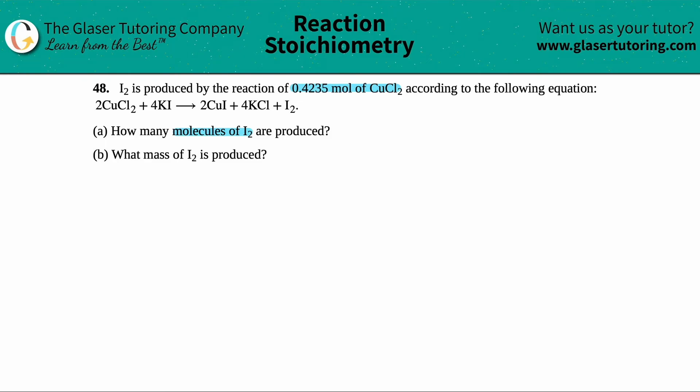Okay, so the first thing I'm going to do is I'm just going to rewrite this a little bigger, just so that we can work with it. So I have 2 CuCl₂ plus 4 KI yields 2 CuI plus 4 KCl and then plus I₂.